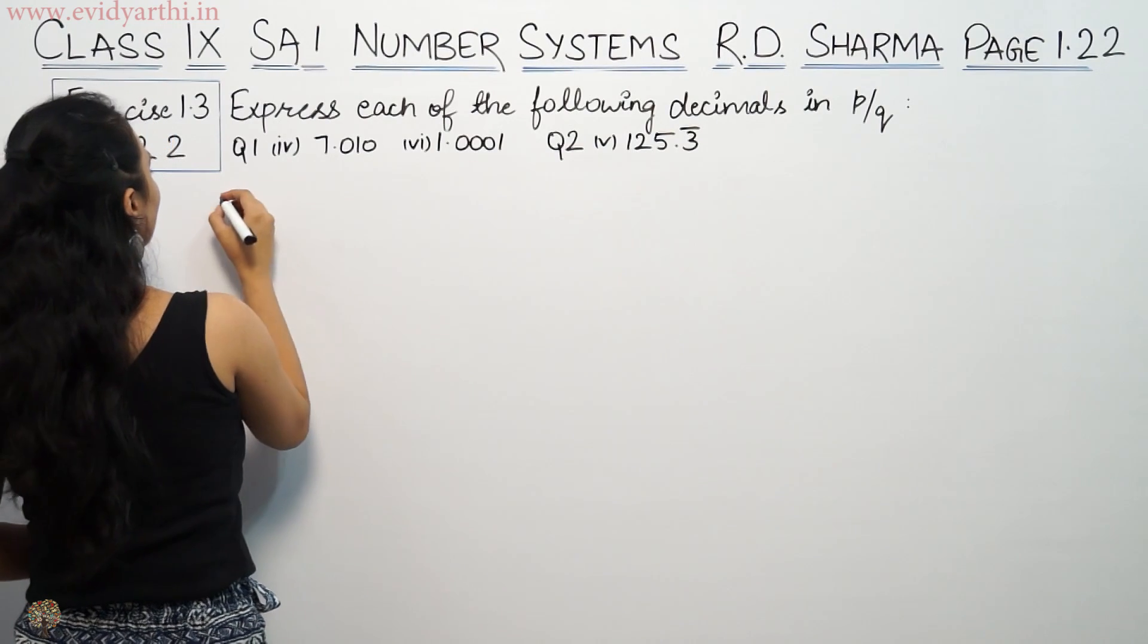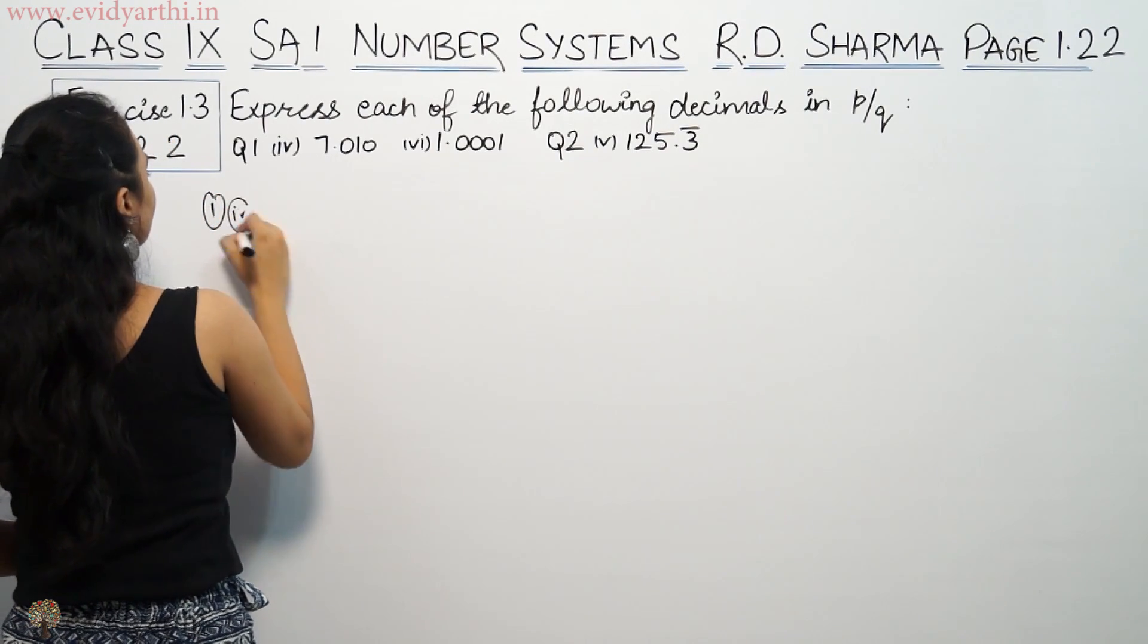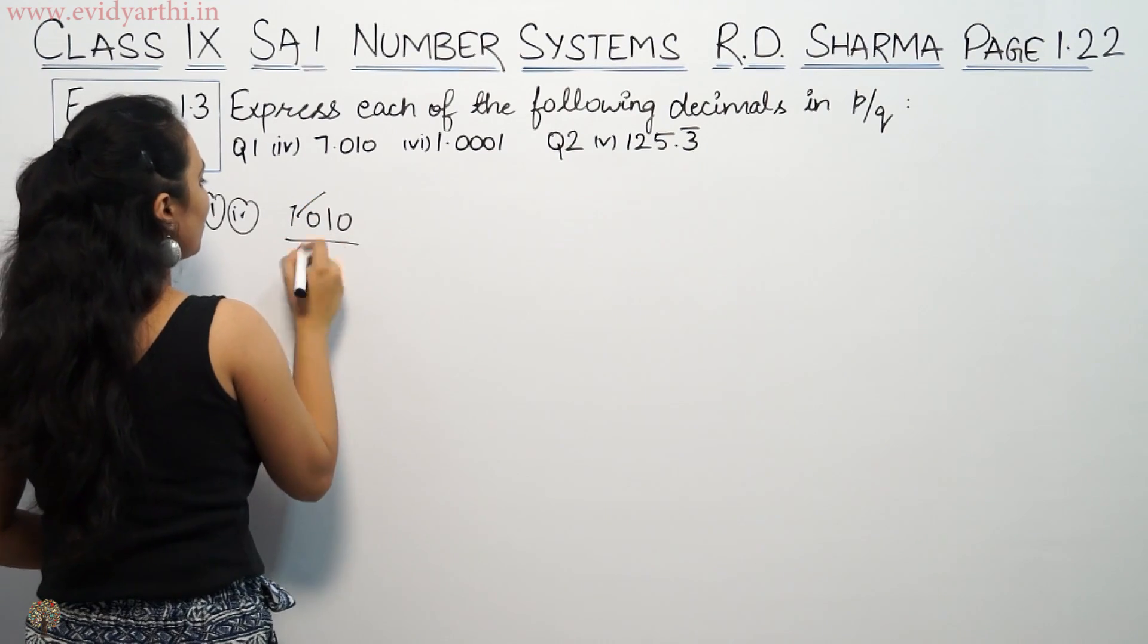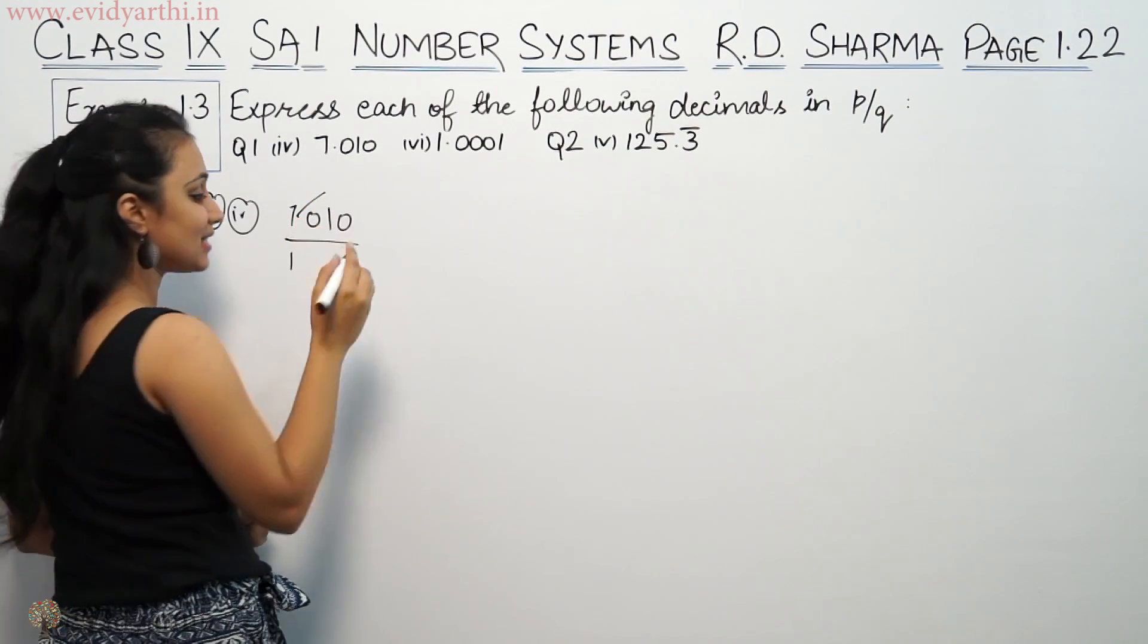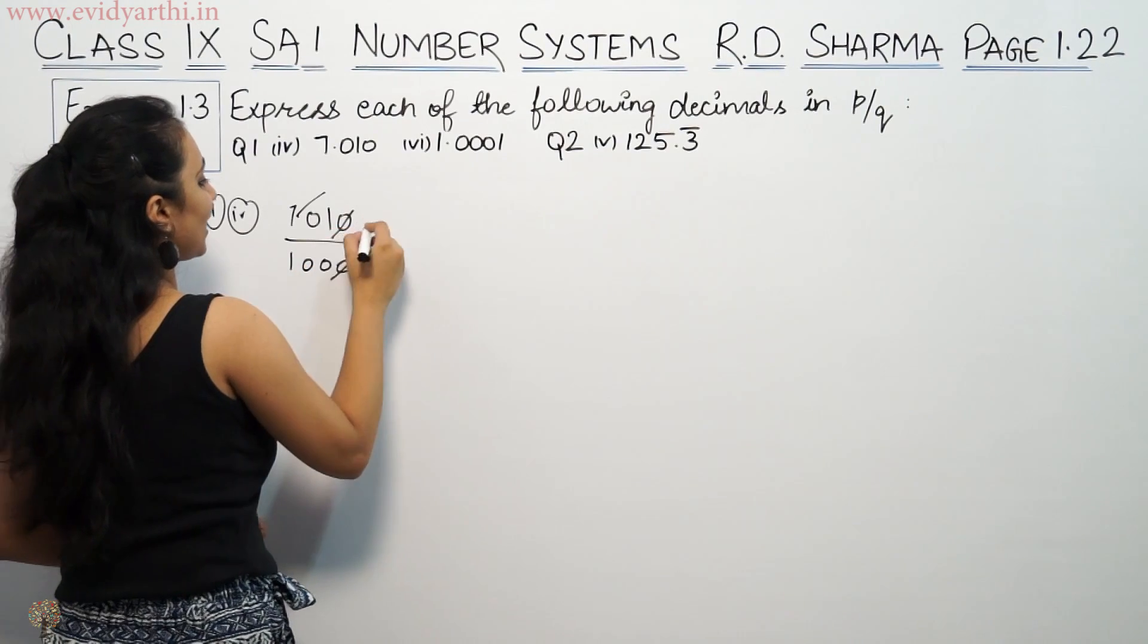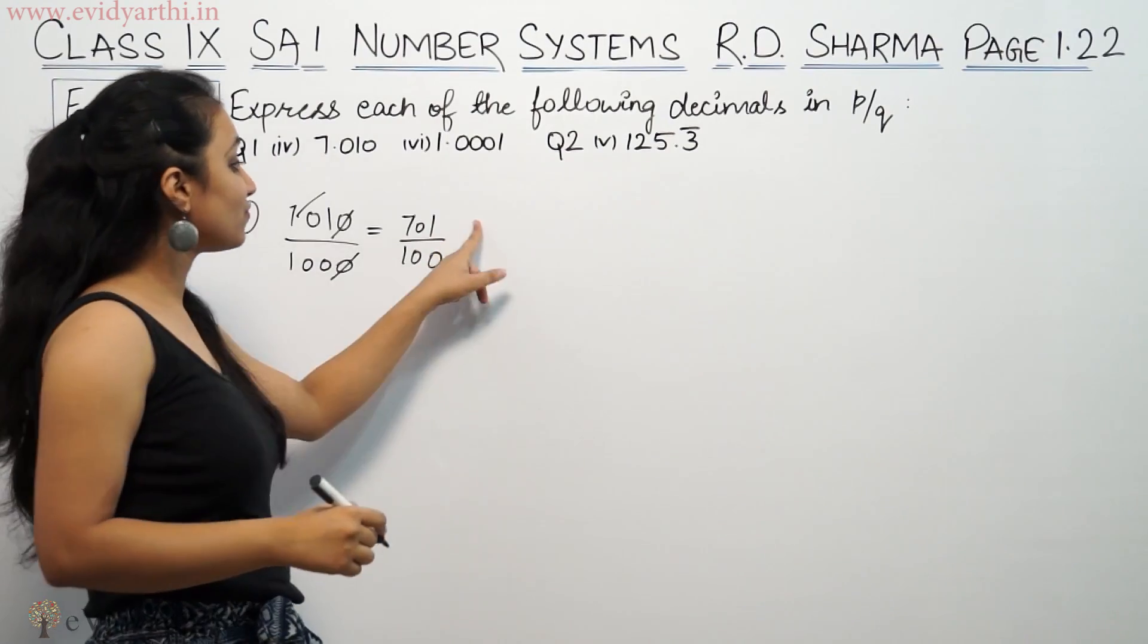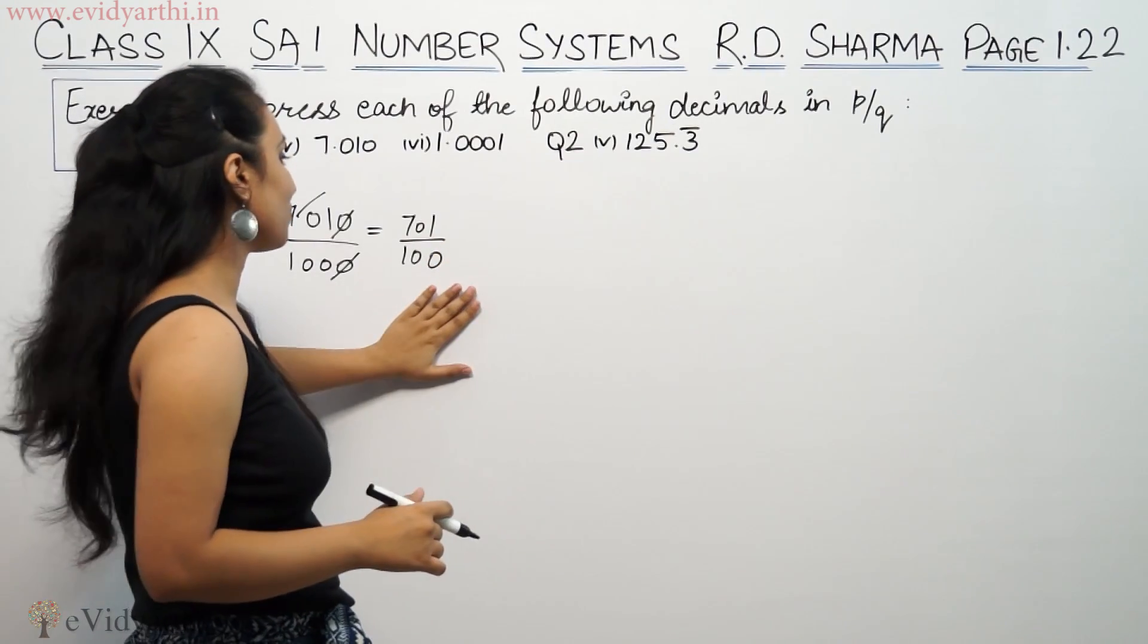This is part 4 from question 1: 7.010. If we remove the decimal, there are 3 places after the decimal, so divide by 1000. This would be 7010 by 1000. Zero-zero cancels, so this becomes 710 by 100. Further simplified, this is P/Q form.